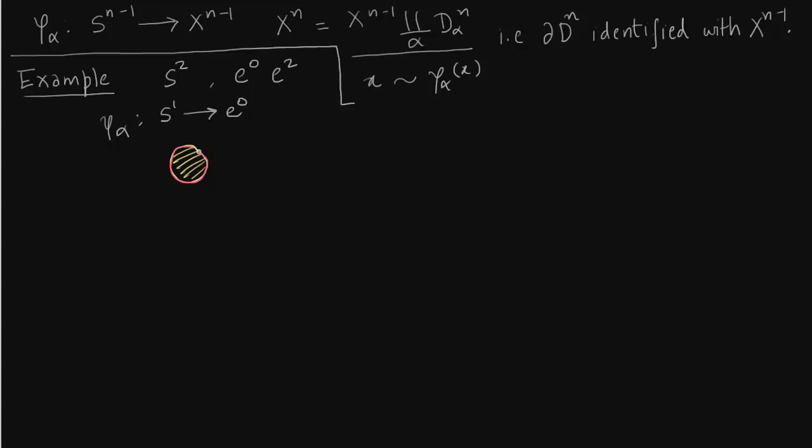So this boundary of the disk is S^1. Okay so e^0 is this point in pink. So we identify boundary with the point. What do we get? We get a sphere and that is e^2, a 2-cell and this e^0. So we get e^0 and e^2.